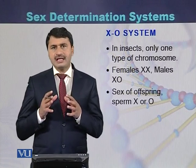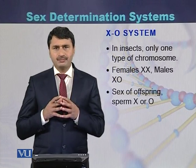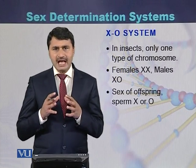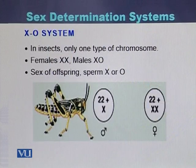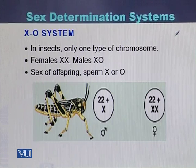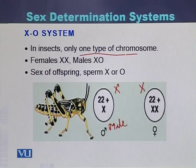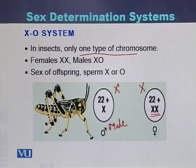In the X0 system, females are XX while the male is X0. Females have two X chromosomes while the male has one X chromosome. Looking at the diagram representing the X0 system, insects have only one type of chromosome — the X chromosome. When there are two X chromosomes it will be female, while males have sperms that contain only a single X chromosome.